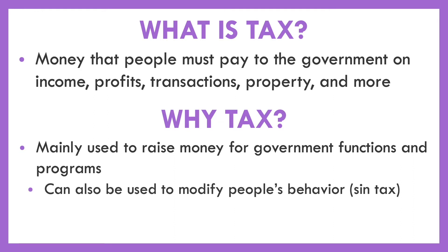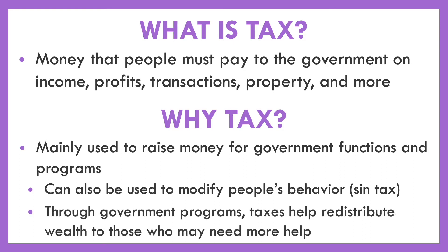Taxes can also be used to modify people's behavior — this is known as a sin tax. For example, putting a tax on cigarettes makes them more expensive, discouraging people from buying them. Taxes are also used through government programs to help redistribute wealth, such as Social Security, Medicare, and Medicaid, where money is redistributed to help people through these programs.